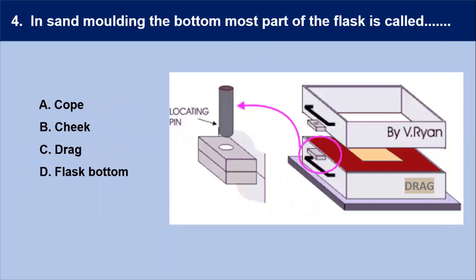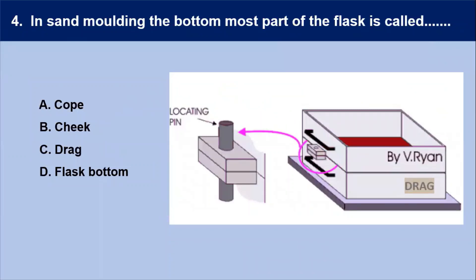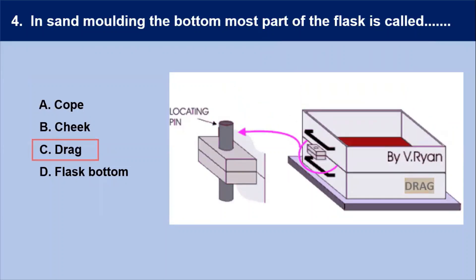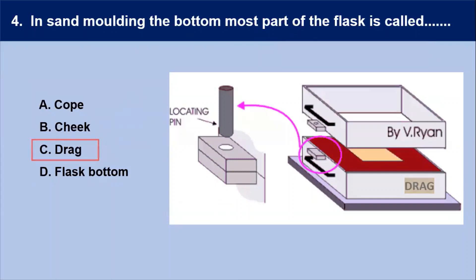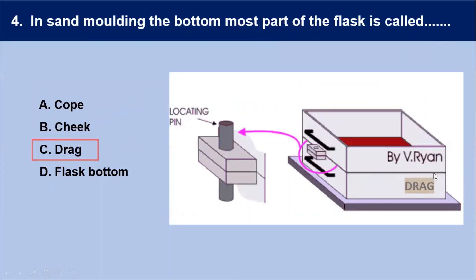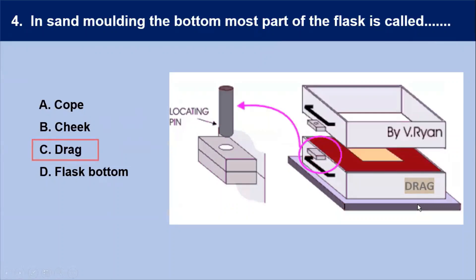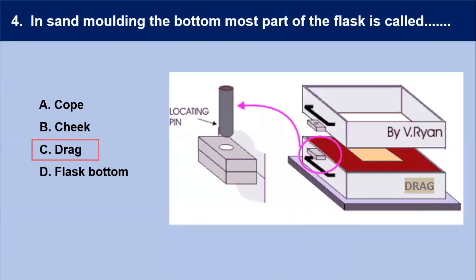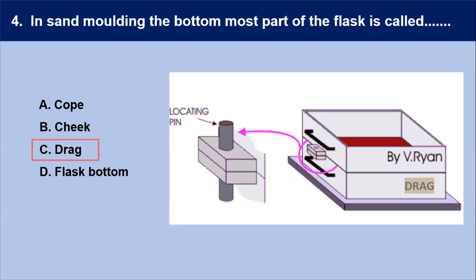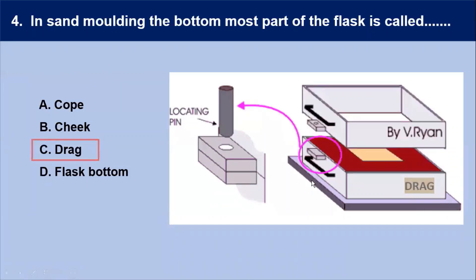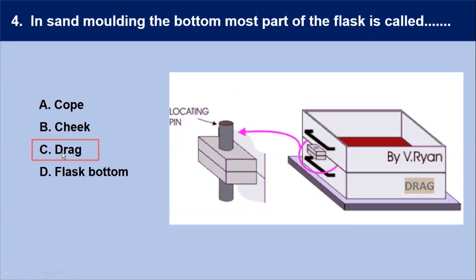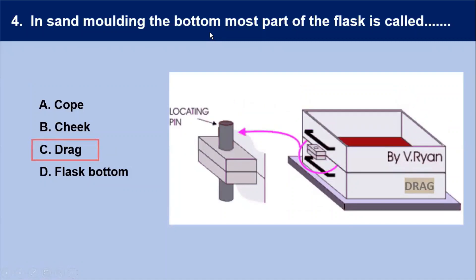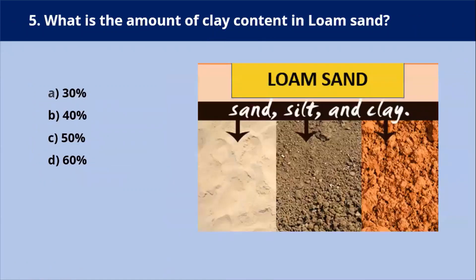Next question: in sand molding, the bottom-most part of the flask is called — the drag is the lower part of a two-part casting flask. The drag is placed upside down on a board around a pattern of a part to be cast. Cope is the upper part and drag is the lower part. Our answer is C — drag, because they are asking for the bottom-most part.